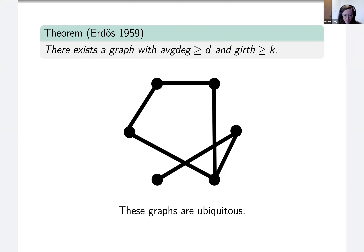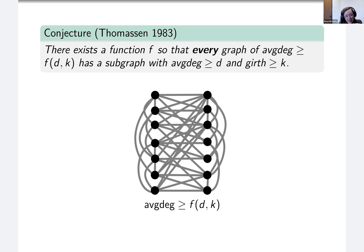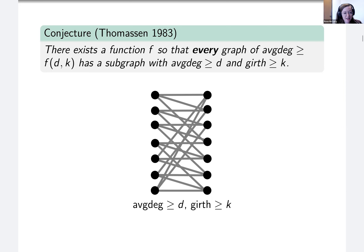There's an amazing conjecture of Thomassen which is almost reaching its 40th anniversary. It says that these graphs are so ubiquitous that they actually are contained in every graph of sufficiently high average degree. Formally, the conjecture is that there exists a function f so that every graph of average degree at least f(d, k) has a subgraph with average degree at least d and girth at least k. The conjecture is really that no matter what graph you start with, as long as it has sufficiently large average degree, you can find this dense subgraph that also has high girth.